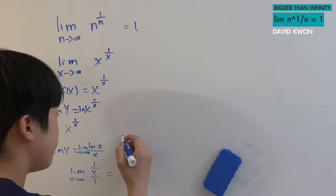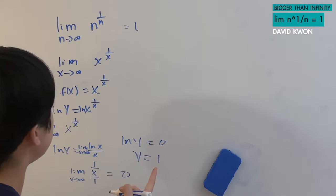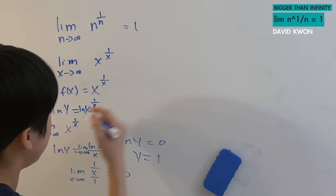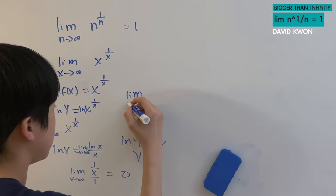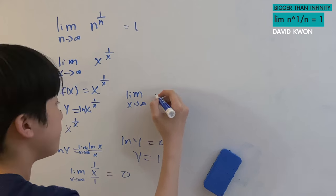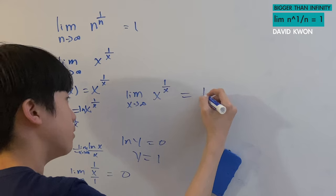Which means ln y is equal to 0, also which means y is equal to 1, which also means, put y in there, we have that as limit as x approaches to infinity of x to the power of 1 over x is equal to 1.